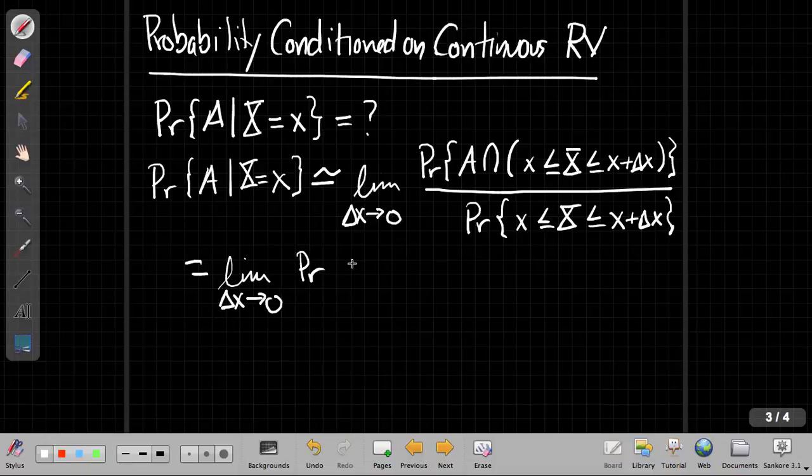But now I'm going to use Bayes' rule on the numerator to say this is the probability, and flip things around, I'm going to say, so now I'm going to condition on A. So by using Bayes' rule, I can say this is the probability that x is between little x and x plus delta x,